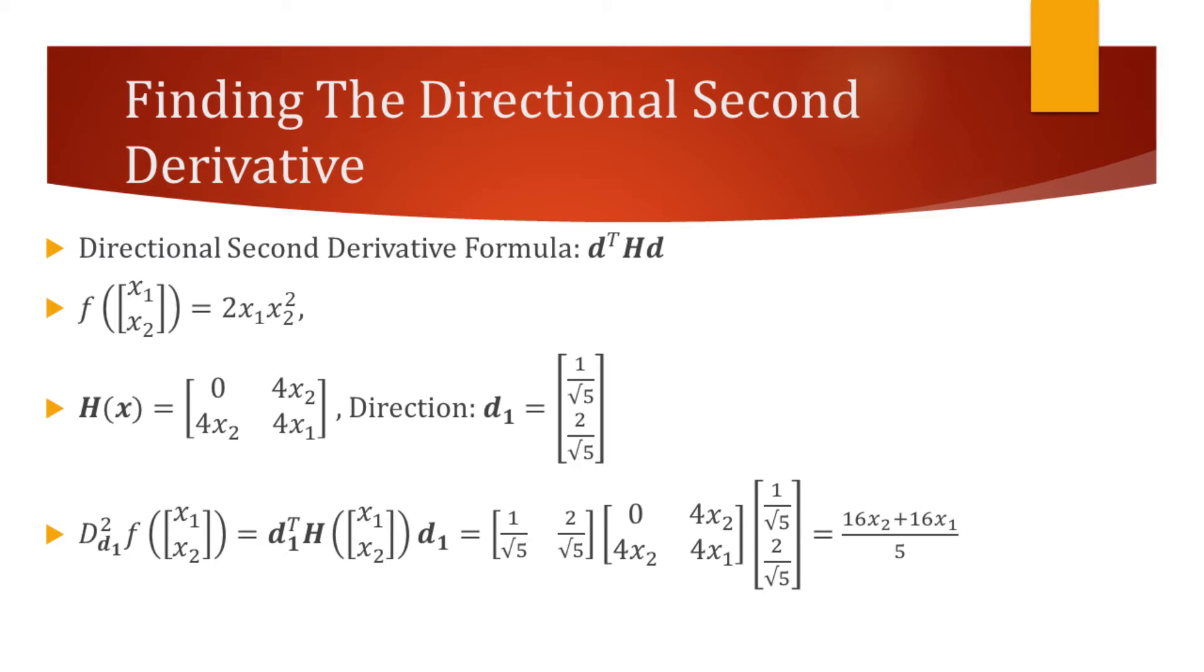In this formula, D stands for the directional vector, and capital H stands for the Hessian matrix.